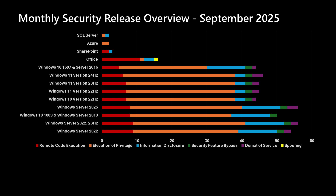Let's get into this September release, starting with the overview chart. Those of you who have seen this video before will recognize this — we put the Windows products towards the bottom, then move up the chart into products we don't necessarily service every single month. On the Windows side, we've been averaging low 50s to low 60s depending on the specific operating system; we're a little bit lower than that average on a handful of operating systems and right in line with some of the others. Moving up the chart, we get into Office, which has a handful of vulnerabilities addressed this month, as well as SharePoint. There are also vulnerabilities in the Azure umbrella and in SQL Server addressed in today's release.